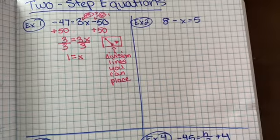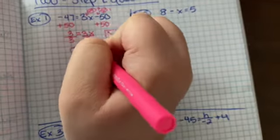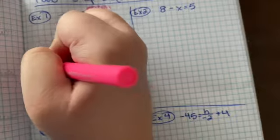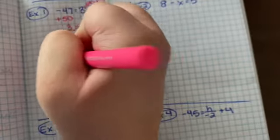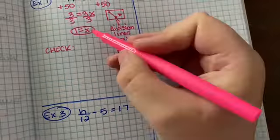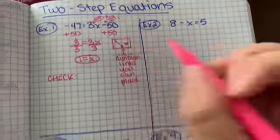So x is going to equal one, and we can check this by plugging that one back into the original equation.